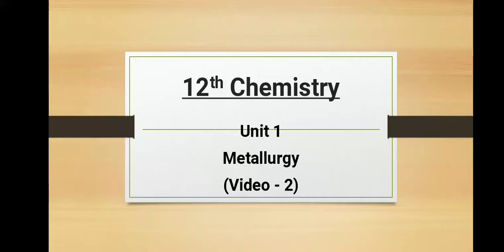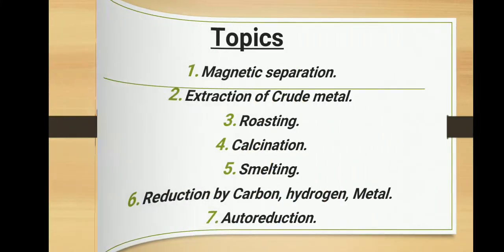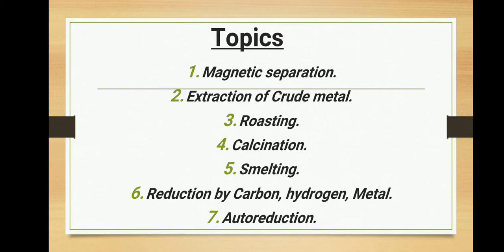Hi students, good morning everyone. Now we are going to talk about metallurgy. We need to cover seven topics: first, magnetic separation; second, extraction of crude metal; third, roasting; fourth, calcination and smelting; and finally, reduction by carbon, reduction by hydrogen, reduction by metal, and autoreduction.